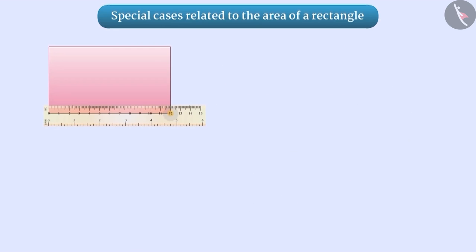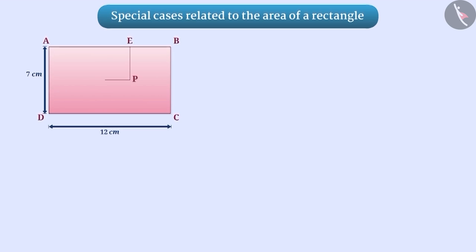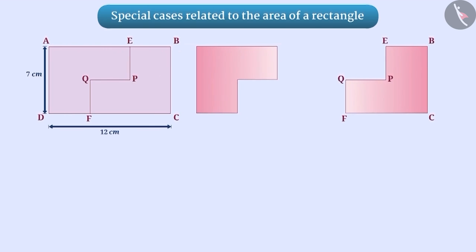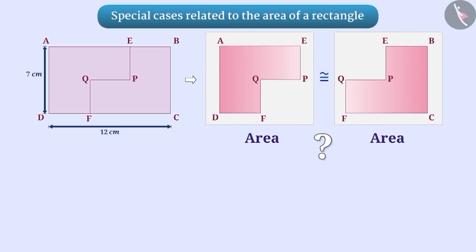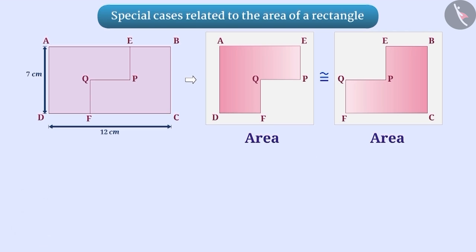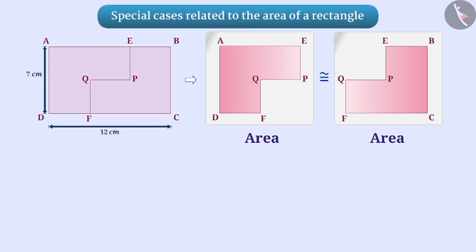Similarly, a rectangle ABCD of breadth 7 cm and length 12 cm is divided into two parts as shown in the figure. Here, AEPQFD is congruent to CFQPEB. The rectangle is divided into two congruent parts. Therefore, the area of one part is equal to the area of the other part.